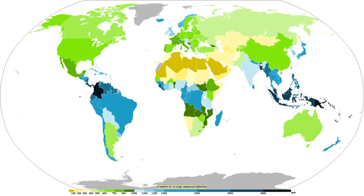Coalescence occurs when water droplets fuse to create larger water droplets, or when water droplets freeze onto an ice crystal, which is known as the Bergeron process. The fall rate of very small droplets is negligible, hence clouds do not fall out of the sky. Precipitation will only occur when these coalesce into larger drops. When air turbulence occurs, water droplets collide, producing larger droplets.